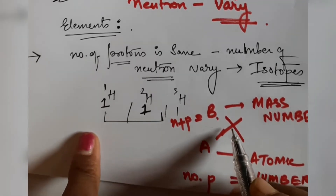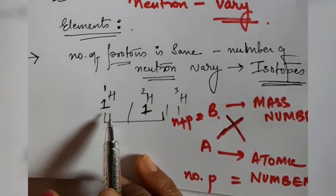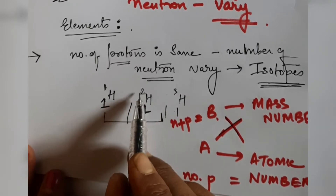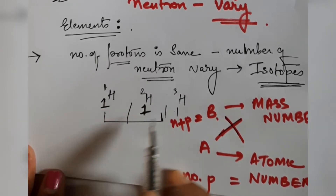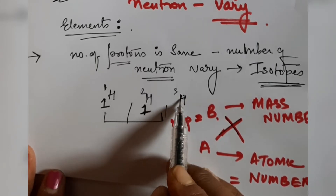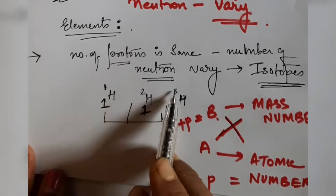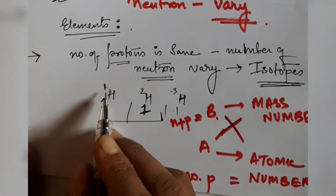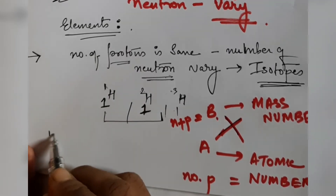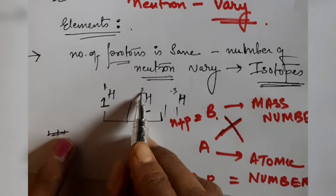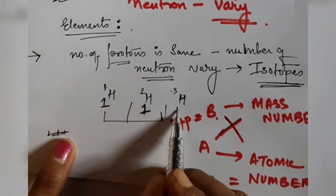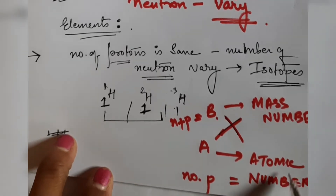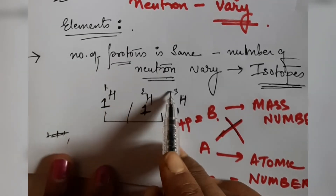For hydrogen, we have ¹₁H and also ²₁H — which is heavy hydrogen or deuterium — and ³₁H, which is unstable. Here the mass number is varying because the neutrons are varying, but the atomic number is one in all cases. Since the atomic number is the same everywhere, the number of protons is the same, but the mass number varies.